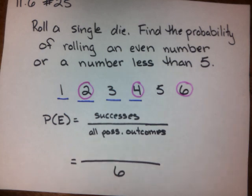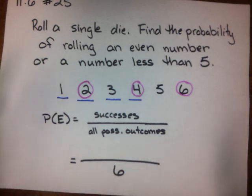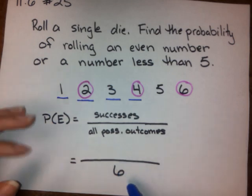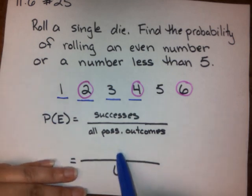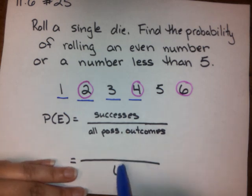Now it might be tempting to add 3 and 4 and we'd wind up with a probability of 7 out of 6. If that happens, we've got a problem because your probability can never be greater than 1. A probability of 1 means it's definitely going to happen — something bigger than 1 means we'd be in trouble. So don't put 7 in the numerator.